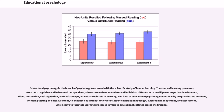Educational psychology is the branch of psychology concerned with the scientific study of human learning. The study of learning processes, from both cognitive and behavioral perspectives, allows researchers to understand individual differences in intelligence, cognitive development, affect, motivation, self-regulation, and self-concept.